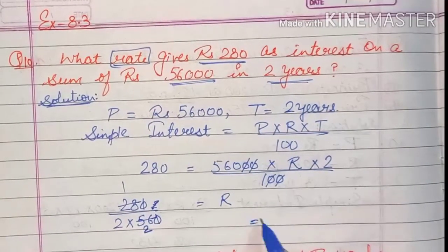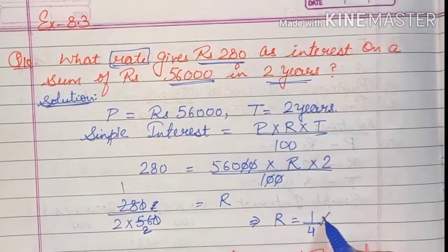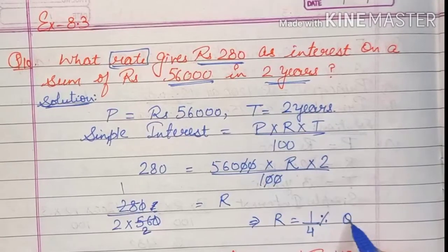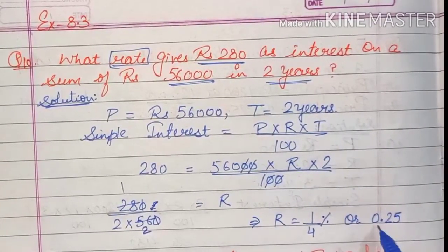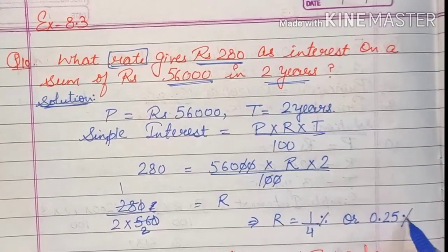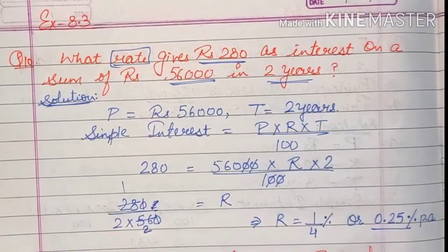So here rate is equal to 1 upon 4. Because rate is always in percentage, so it is 1 upon 4 percent or we can say that it is 0.25 percent per annum. So this is question number 10.